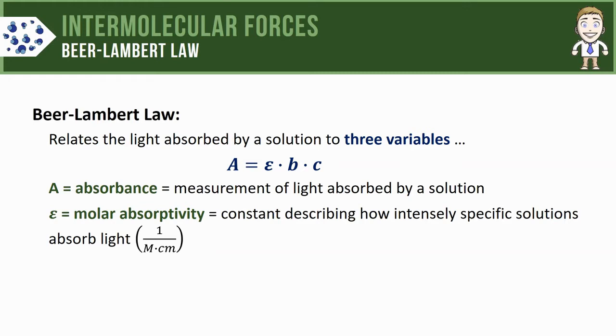The lowercase b is the symbol used for path length—that is, the distance that light travels through a solution, typically in a cuvette. This is generally given in centimeters.